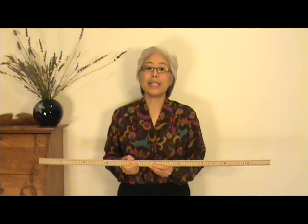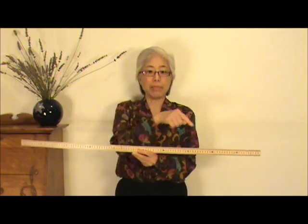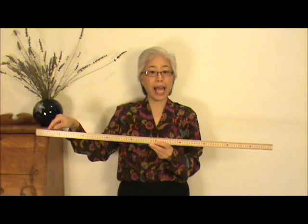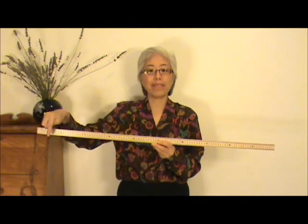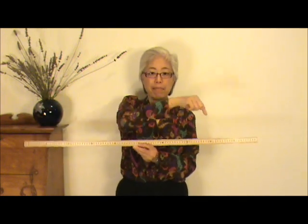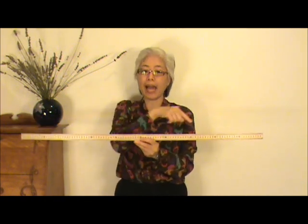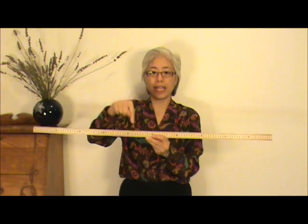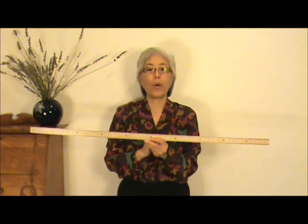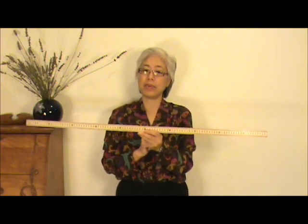There's another term called the center of gravity. This meter stick has mass distributed everywhere, which means gravity pulls on bits of mass everywhere throughout the stick. And the center of gravity is the average location of the gravitational force. So where do you think the center of gravity of the meter stick is?